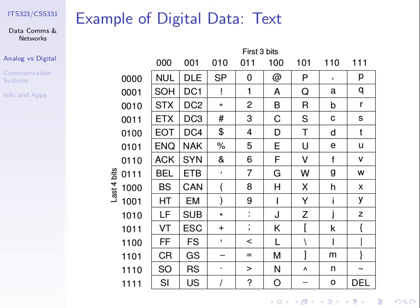An example of digital data: the ASCII table gives us a way to convert English characters into digital data — into binary. If I wanted to write the message 'HELLO' in uppercase, I can take that information and convert it into a sequence of bits.